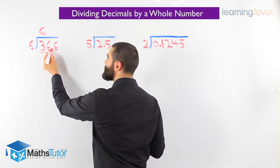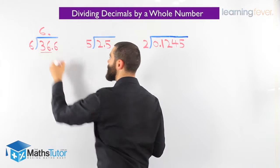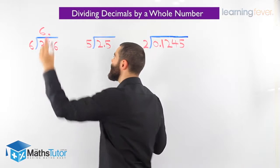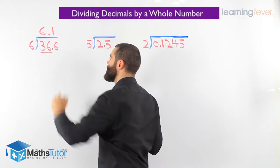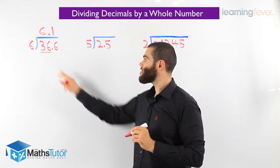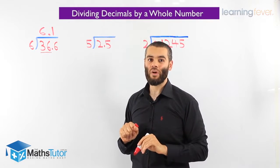Then, we realize we have our point. We put our point straight away. Then, we ask, how many 6's go into 6? And of course, the obvious answer is 1, 6.1. So, 36.6 divided by 6 is 6.1.